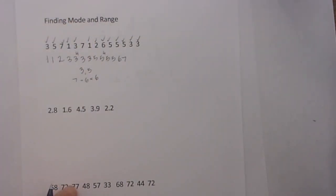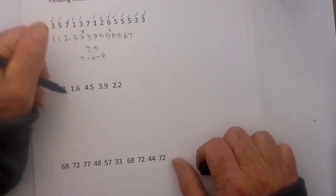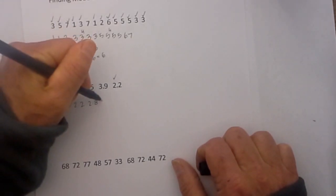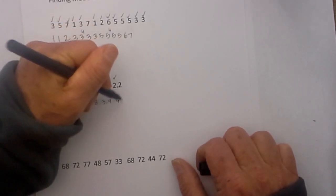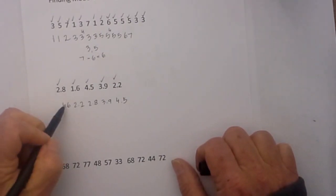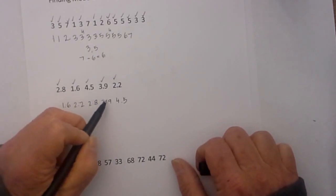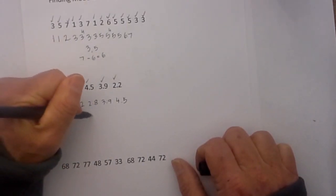So next let's move to the next one and let's rewrite these from least to greatest. We have 1.6 and then we have 2.2 and then we have 2.8 and 3.9 and 4.5. Now in this particular example we have 1 1.6 and 1 2.2 and 1 2.8 and 1 3.9 and 1 4.5, so the mode is none.